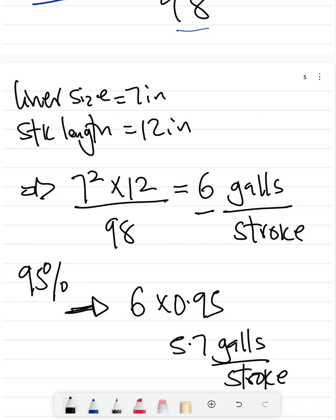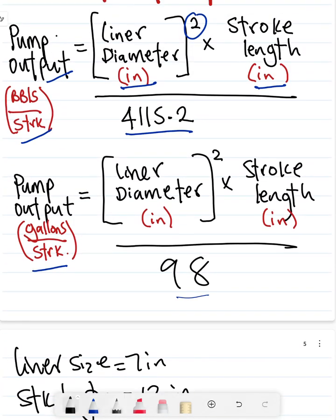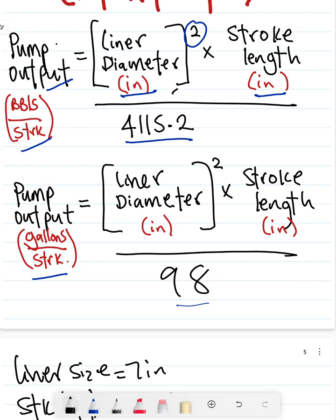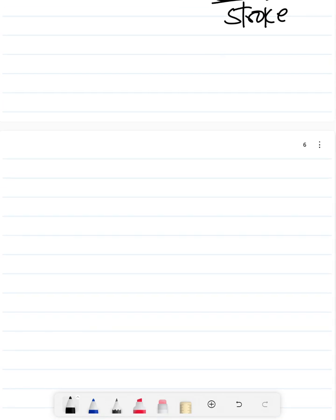If you were to do this in barrels per stroke, all you need to do is 7 squared times 12 divided by 4115.2 and get your answer in barrels per stroke.